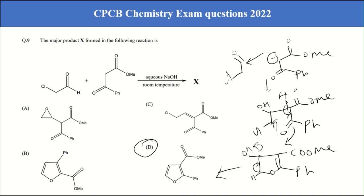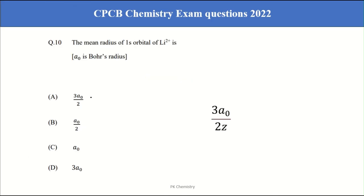Moving to next question. Mean radius of 1s orbital of lithium 2 plus. The mean radius of 1s orbital is 3a0 by 2Z. It's given in the physical chemistry Atkins book. So if you substitute atomic number 3a0 by 2 into 3 you will get cancel 3 by 3 then you will get a0 by 2. Our correct answer is B.